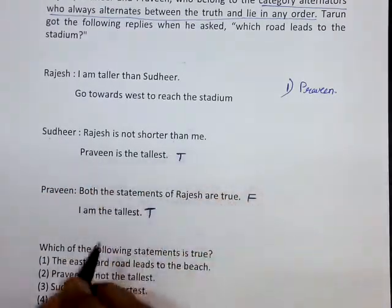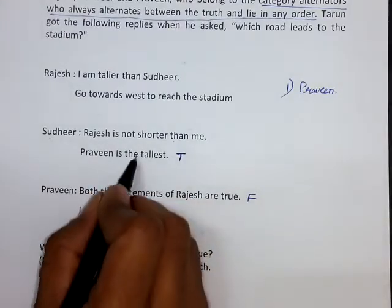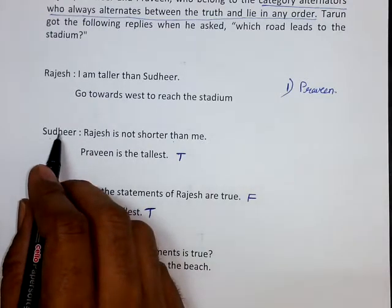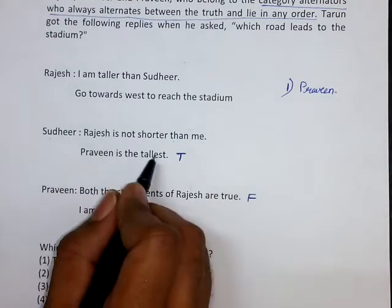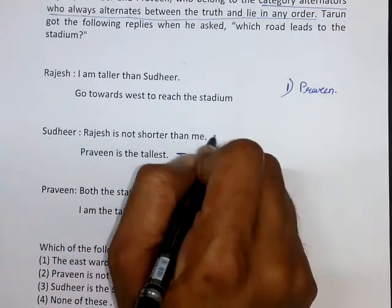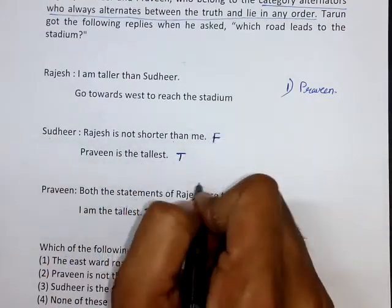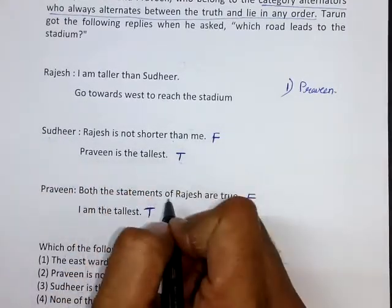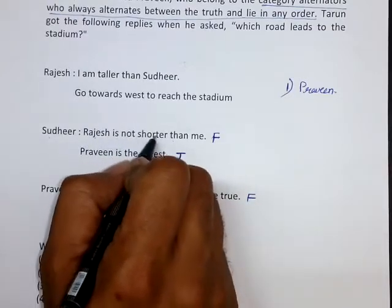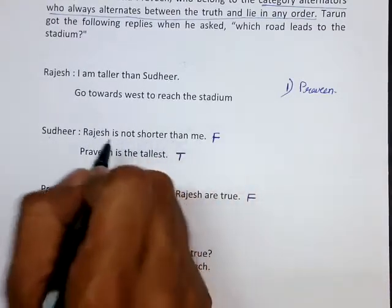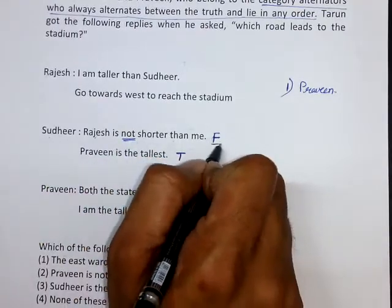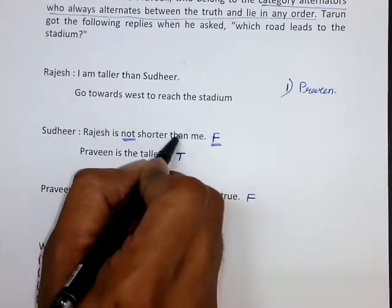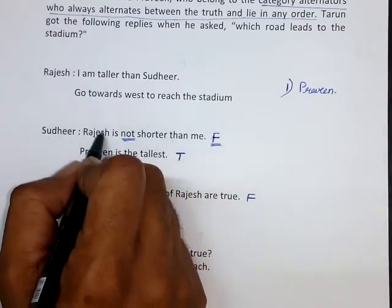Now consider the statement made by Sudhir. Sudhir is telling us that Praveen is the tallest, which is true. Since every person involved is an alternator and this statement is true, the other statement has to be false — so Sudhir becomes an alternator with the pattern false-true.